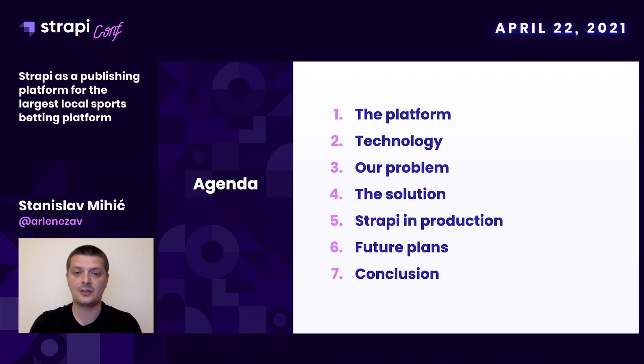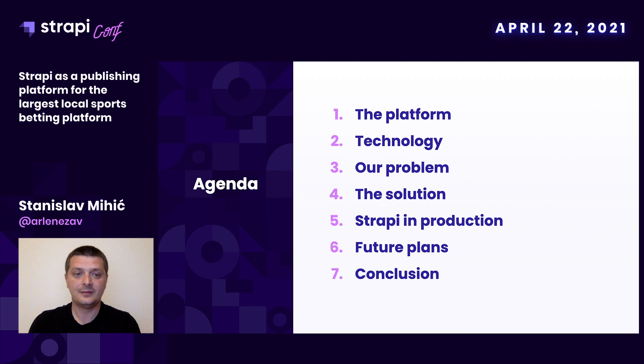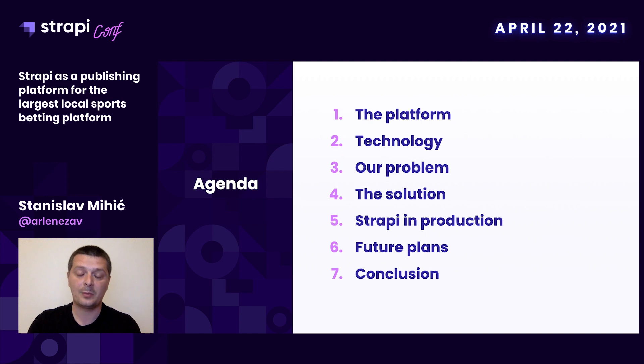Hi, my name is Stanislav Mihic. I work as a senior software engineer at Minus5 company. The title of my presentation is Strapi as a publishing platform for the largest local sports betting platform. A few topics I would like to cover: first, an introduction about our platform, because we are a product-based company and our main product is a sportsbook. Later I will explain how complex the product is and how Strapi fits in perfectly — what our problem is, how Strapi resolves it, and how it plays together with our platform in production.